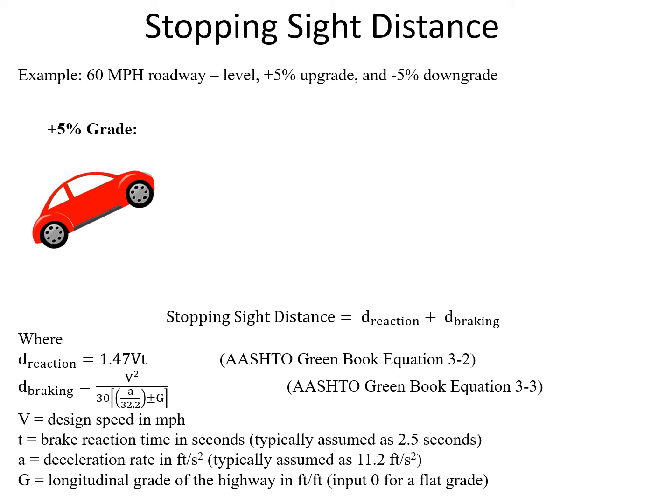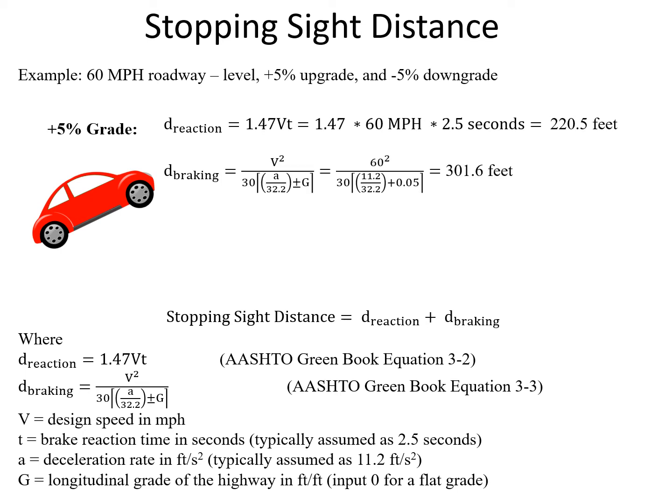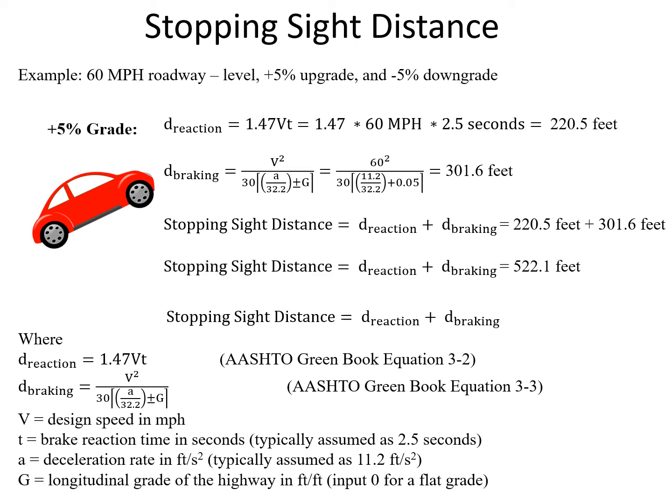Now looking at the case with a 5% upgrade, the reaction distance doesn't change — still 220.5 feet, since none of those assumptions are adjusted by grade. For the braking distance, we add plus 0.05 in the denominator, and that changes the braking distance to 301.6 feet. This is lower than our level scenario because the upgrade helps us slow down. Adding both terms together gives an overall stopping sight distance of 522.1 feet — again lower than the level condition.